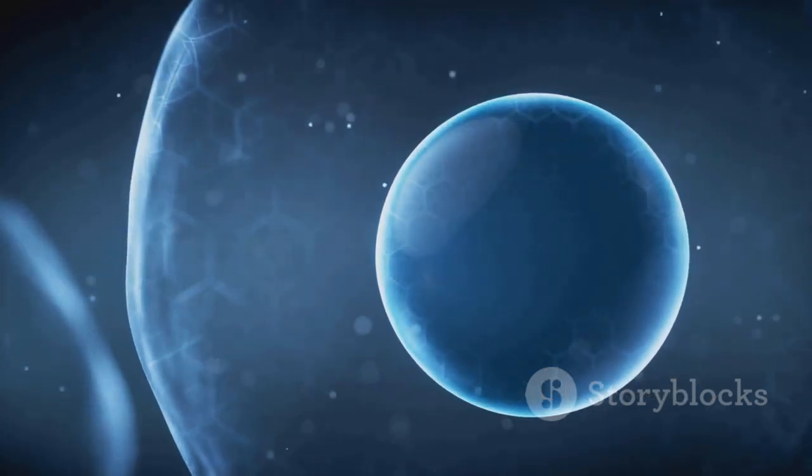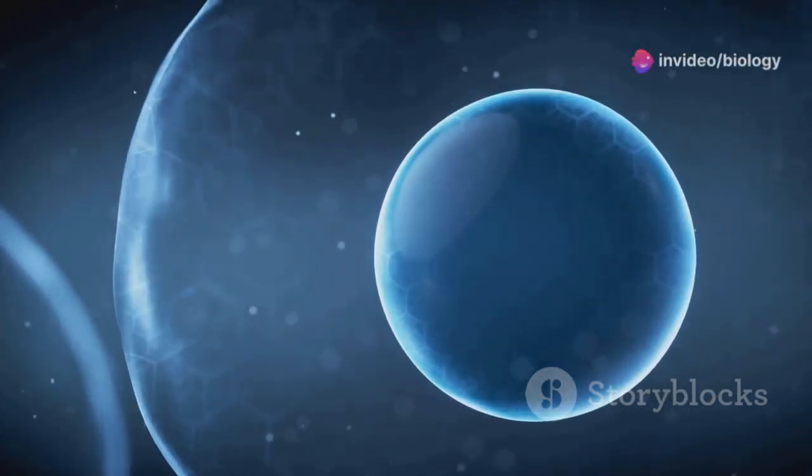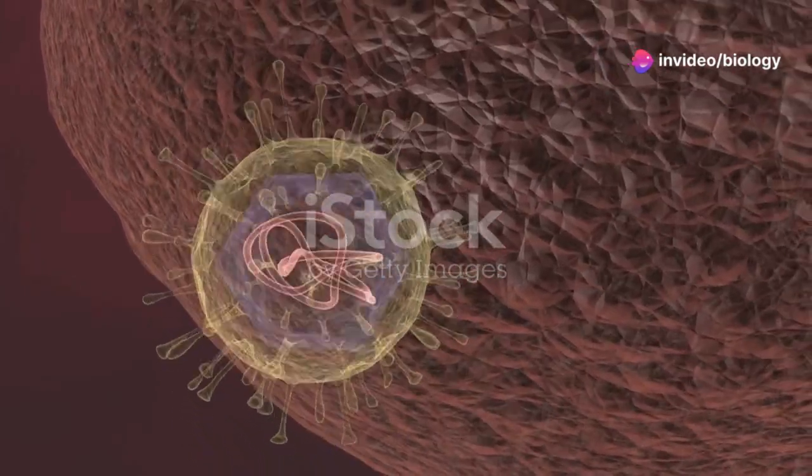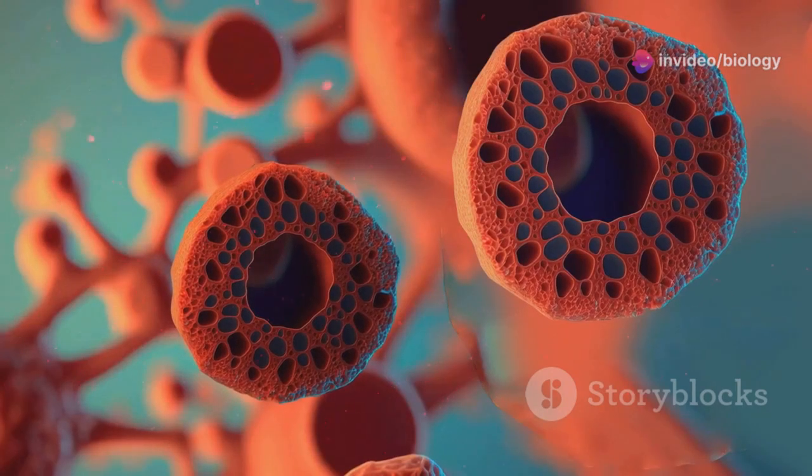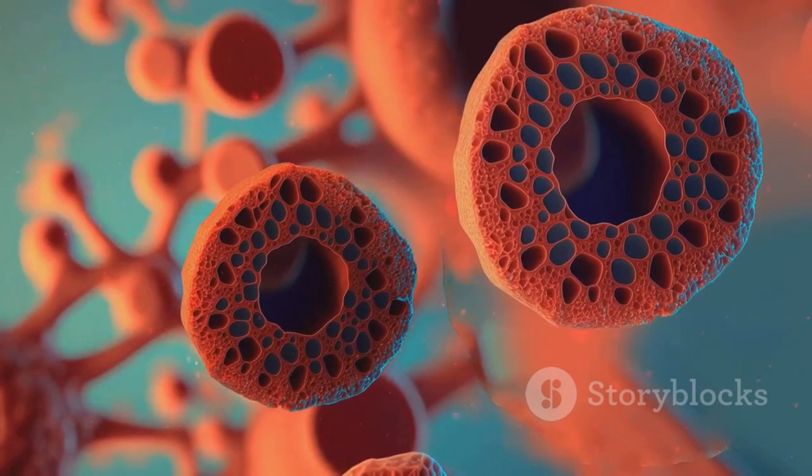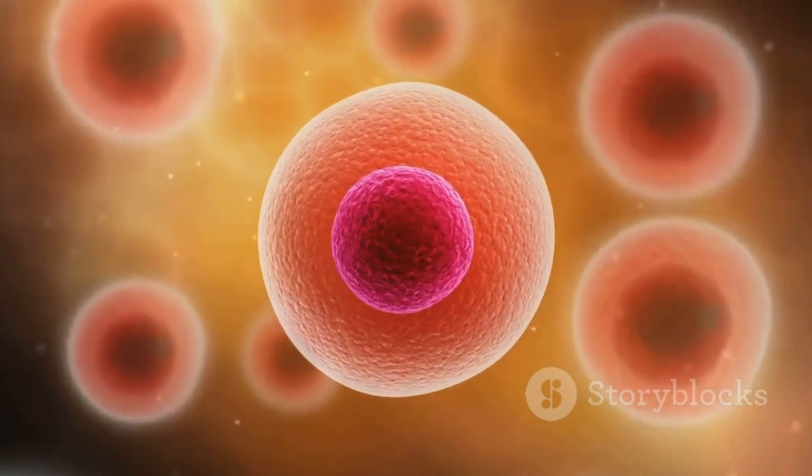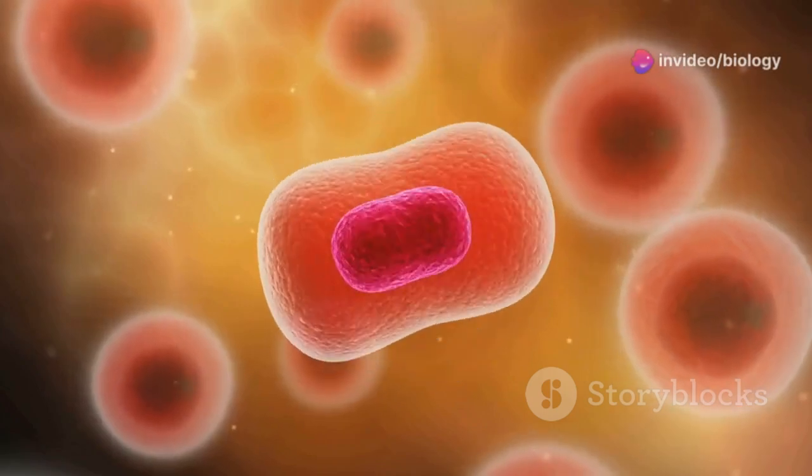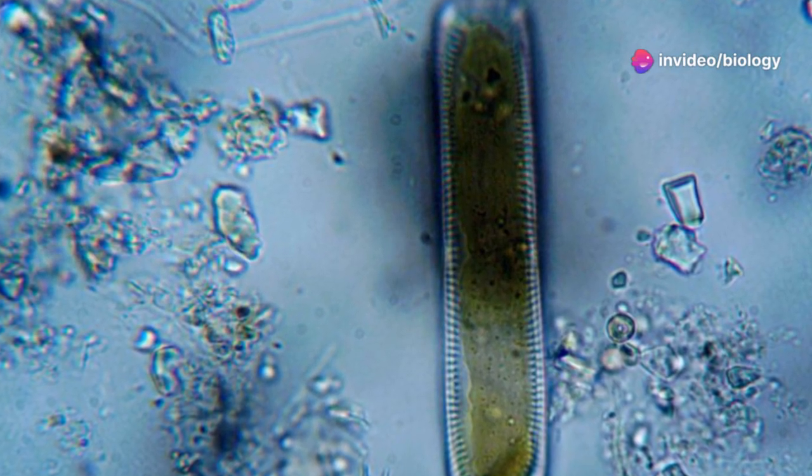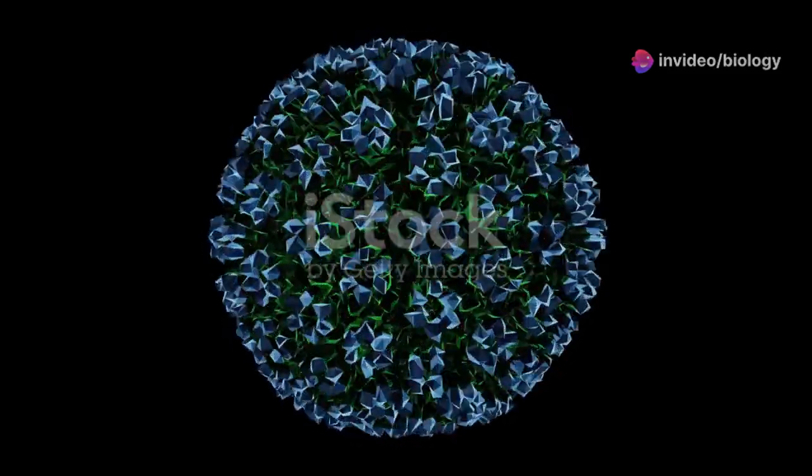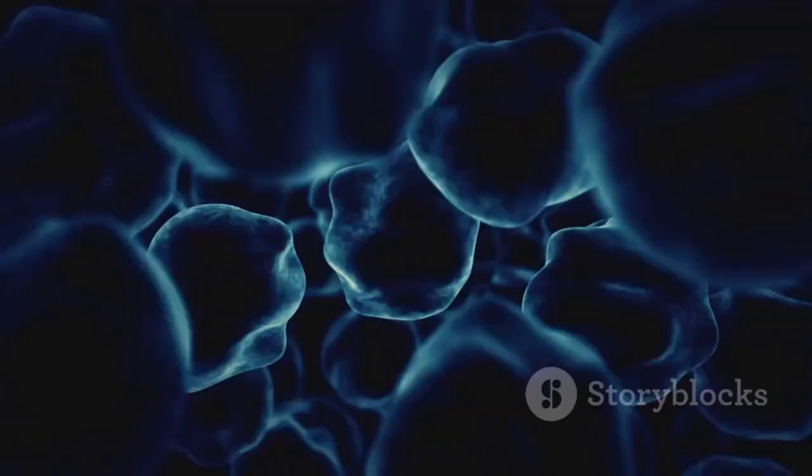So what makes a prokaryotic cell tick? Well, imagine a tiny self-contained factory. Inside, you won't find a nucleus, which is like the control center of a eukaryotic cell. Instead, their genetic material - a single circular DNA molecule - hangs out in a region called the nucleoid.